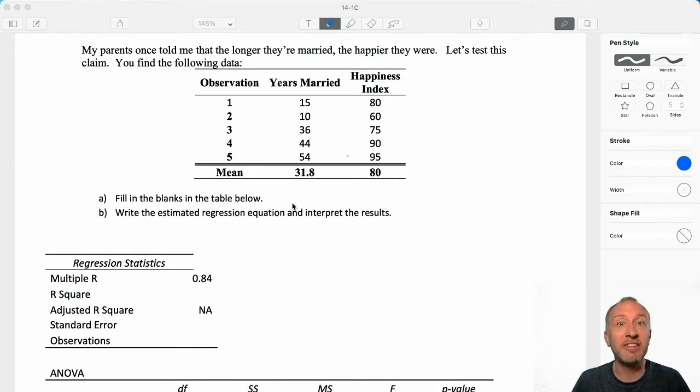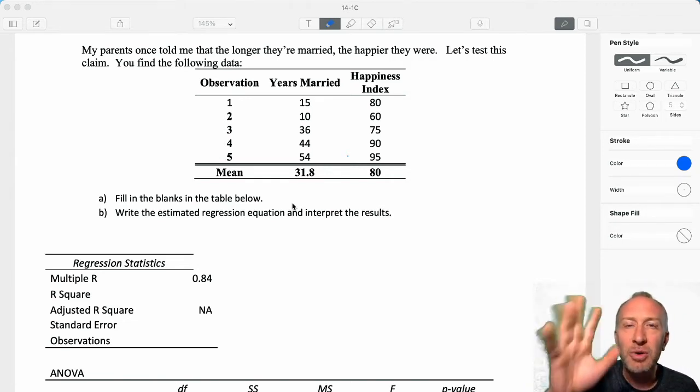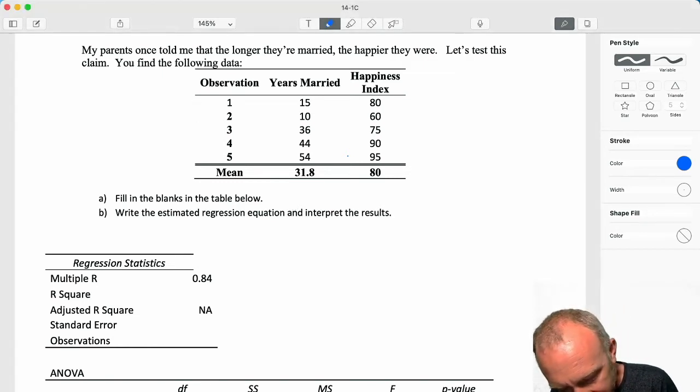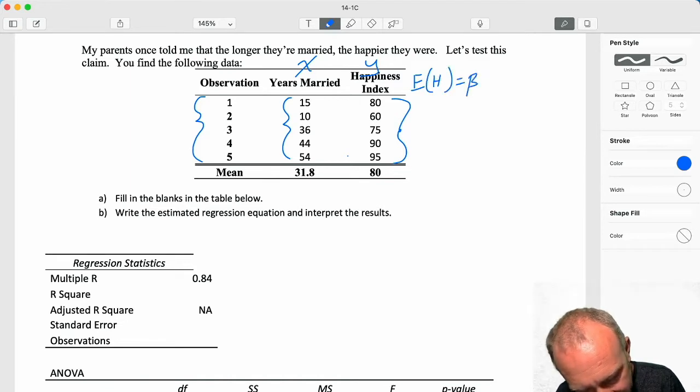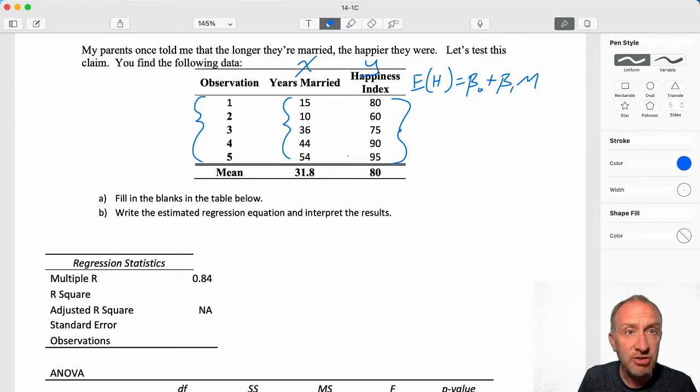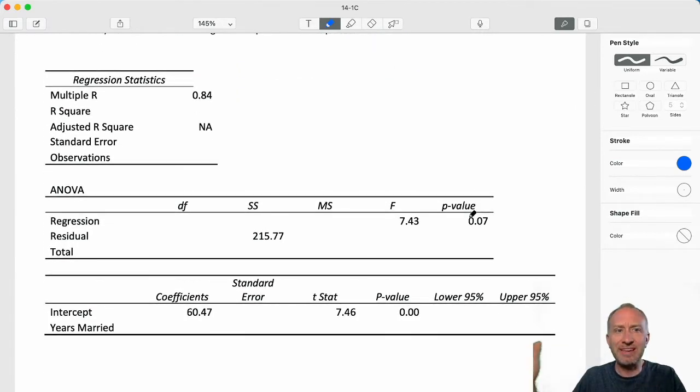My parents once told me that the longer they're married, the happier they were. My parents have just, they're over 50 years they've been married now. My goodness, they must be ecstatic if this relationship holds. They must be so happy. So here we have the following data. Here we have our number of observations. We have our years married. So this is our independent variable. And we have our happiness index, some measure of happiness. So here I have that dependent variable. Our regression model, that expected happiness is some linear function of years married. So this is the regression model that we're going to try to predict. We're going to try to estimate this regression model. So let's just jump into what we have to work with. Once again, different starting point than any of the previous problems. Different little tidbits of information.